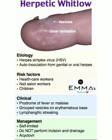Now about the etiology of herpetic whitlow: the main etiology is herpes simplex virus (HSV) and auto-inoculation from genital or oral herpes. So the main cause of herpetic whitlow is herpes simplex virus — genital or oral.